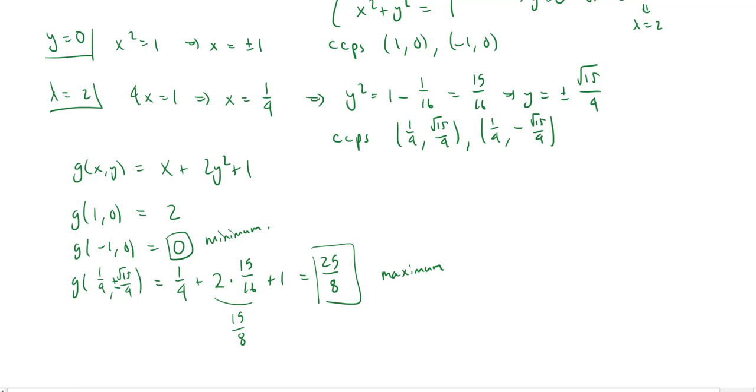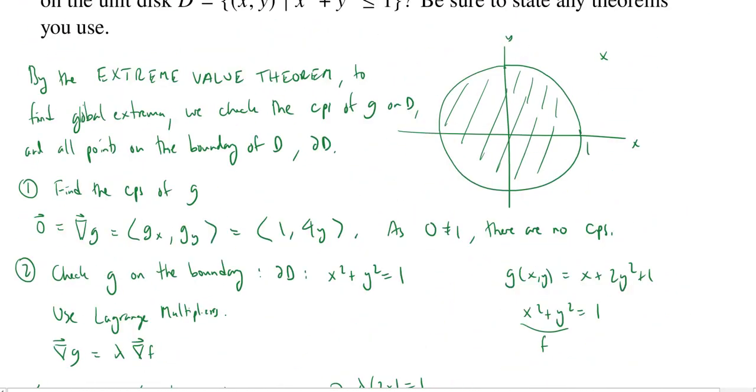So on that disk that we had up above, at negative 1, 0, this was going to end up giving us our minimum. And at 1 fourth, so that's about here, up on the curve, at 1 fourth and then root 15 over 4, that will actually give us our maximum value for G. So this is max value for G. Not for the circle, but for G. And that's how we can put together the extreme value theorem as well as the method of Lagrange multipliers.